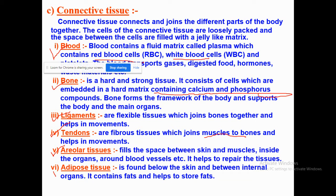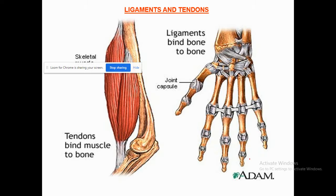Areolar tissue fills the space between the skin and the muscles. Inside the organs and around the blood vessels, it helps to repair tissues. It also provides a cushion-like structure which protects the body against mechanical shocks. Adipose tissue is mostly found below the skin and between the internal organs, and it stores fat. A ligament binds bone to bone, and a tendon binds muscle to bone.